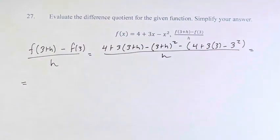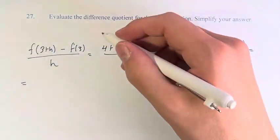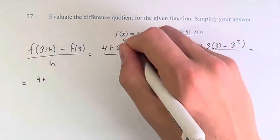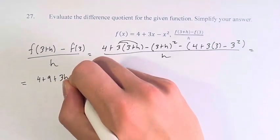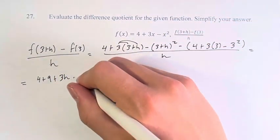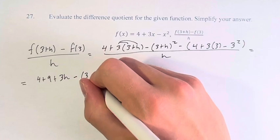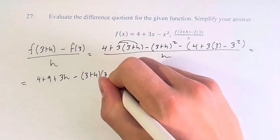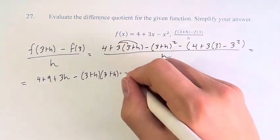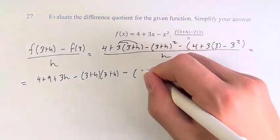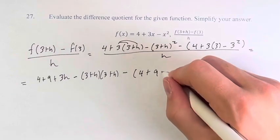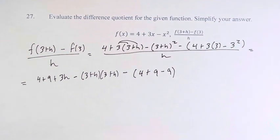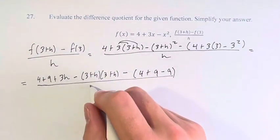And now we have something that we can solve. So we have 4 + 3(3) is 9, 3(h) is 3h, minus (3+h)(3+h). I'll write it like this so we can solve it in a second. Minus 4 + 3(3) is 9, minus 3² is minus 9, over h.